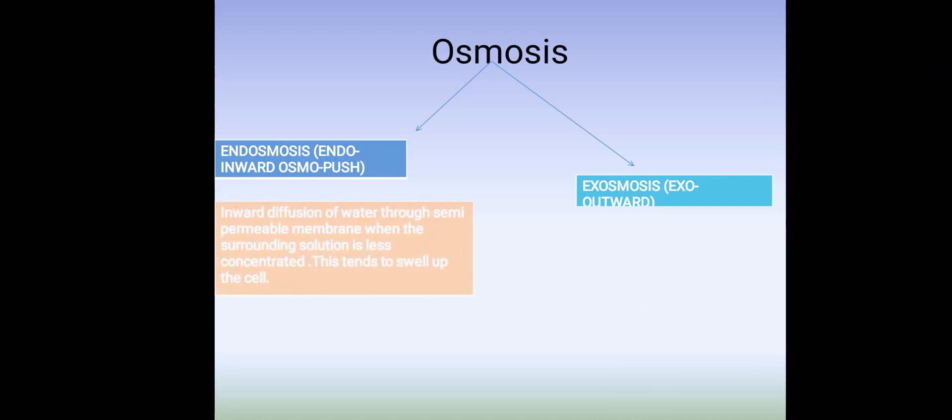Osmosis is of two types. First is endosmosis. Endo means inward, osmo means push. So endosmosis is the inward diffusion of water through a semi-permeable membrane when the surrounding solution is less concentrated. This tends to swell up the cell, resulting in swelling of the cells.